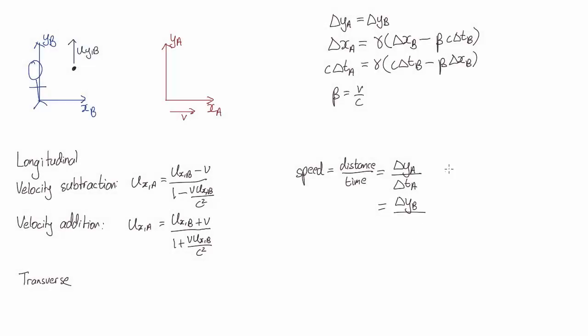So yA is just yB, and our expression for delta TA is substituting it in, and then as before we just divide by delta TB.